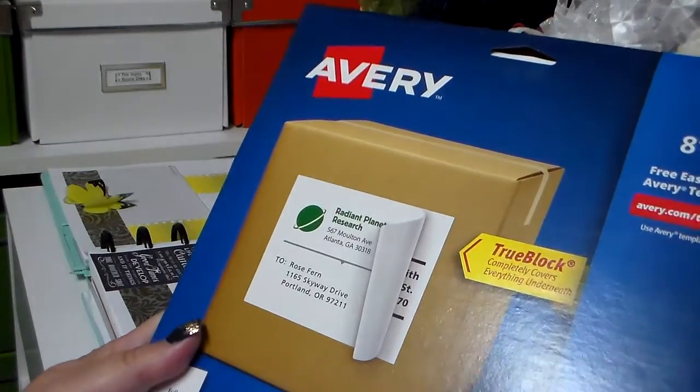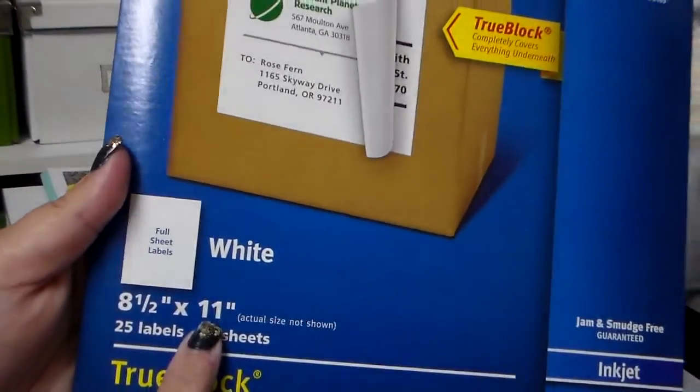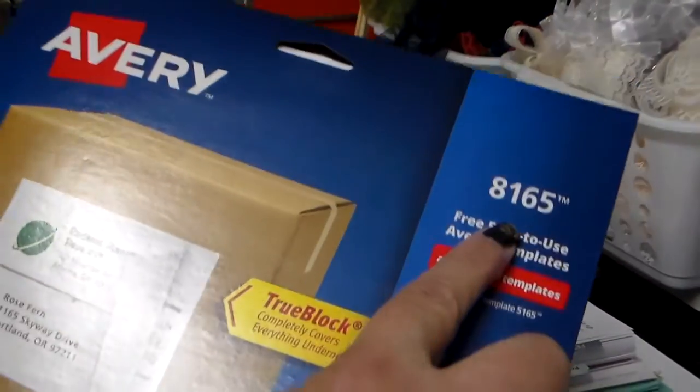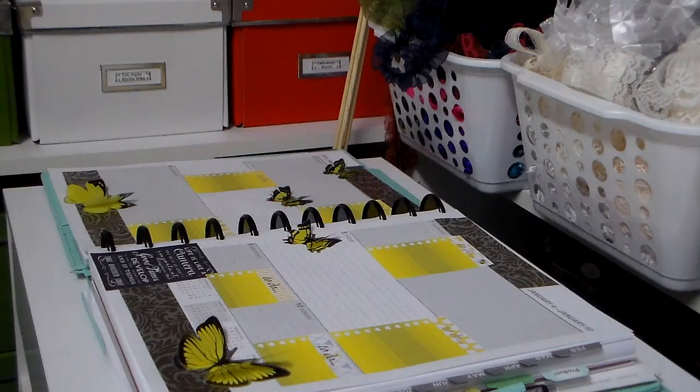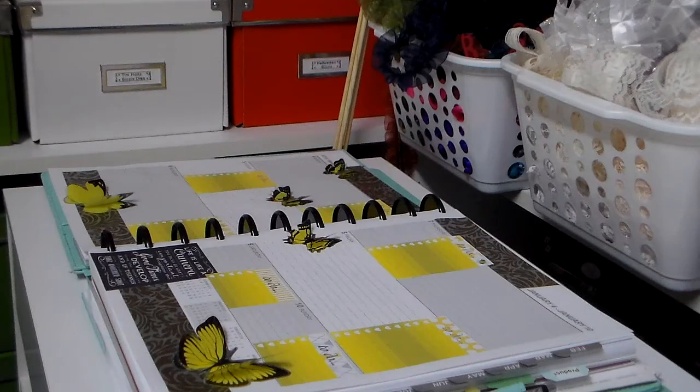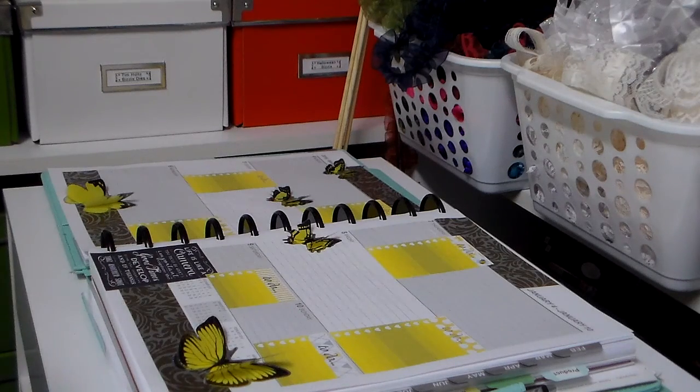So then I said wait a minute, let me go see the regular 8.5 by 11 sheet of Avery stickers and this is $8.165. Let me see what quality of paper that is. So I looked at the quality and basically it's exactly the same quality. So you're just getting the same paper but you're paying so much more for it just because it's sticker paper. This is exactly the same thing, 8.5 by 11, a full sheet so I can print the whole entire thing, all the stickers on here.